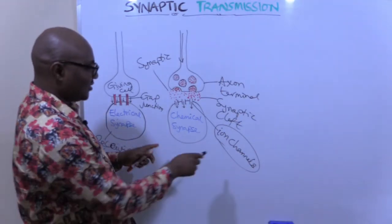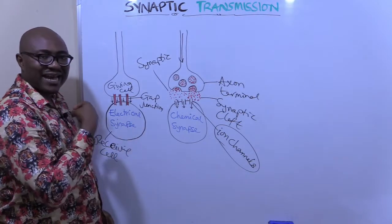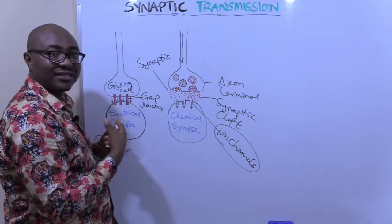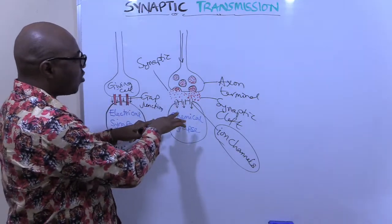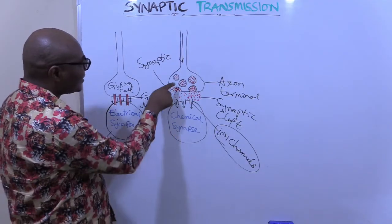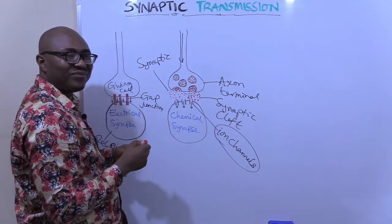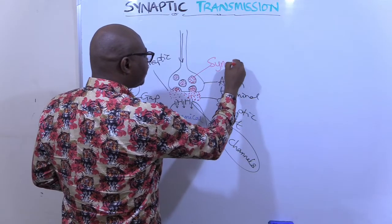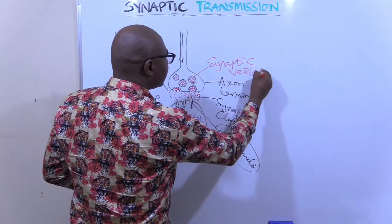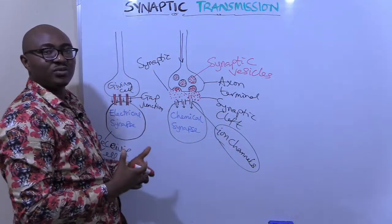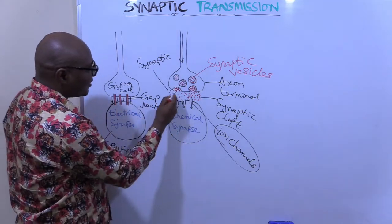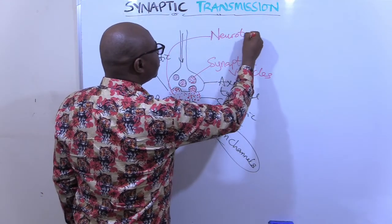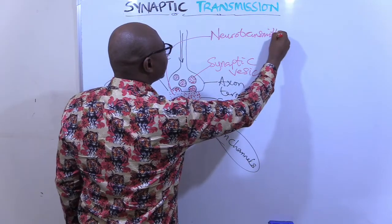A good place where you have electrical synapses is in the heart — cardiac muscle — where there is electrical synapse to make transmission very fast. But the chemical synapse is more common. These things here are called synaptic vesicles. What do they contain? They contain what is known as a neurotransmitter. Those red dots here — neurotransmitters.